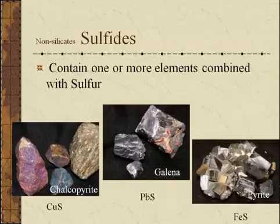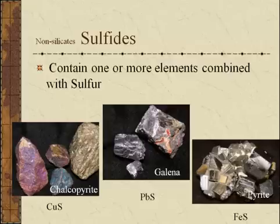The non-silicate group sulfides have one or more elements combined with the element sulfur. Chalcopyrite is a copper sulfide, galena is a lead sulfide, and pyrite — the common fool's gold — is iron sulfide.